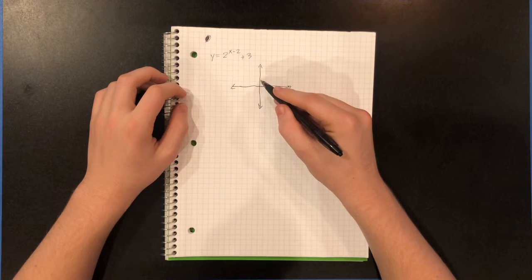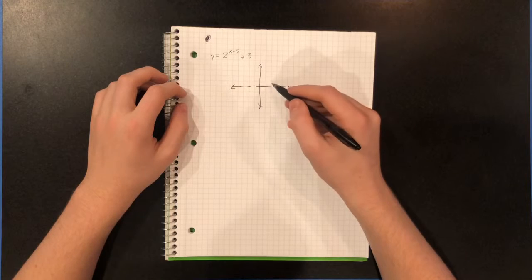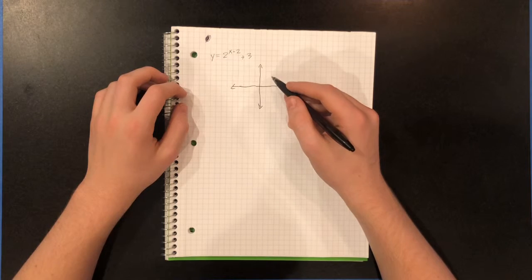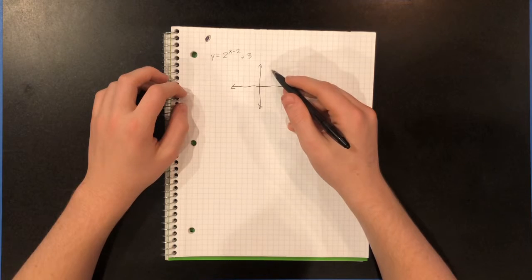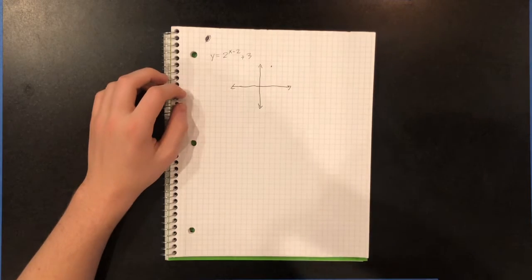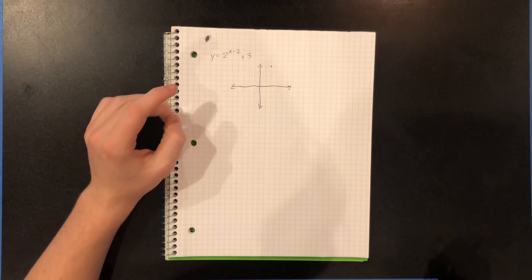So it's 2 right. So we're going to start here but then x minus 2 so we're going to go right 2. And then plus 3, so we're going to go up 3, 1, 2, 3. And this is going to be your first point right there at 2, 4.